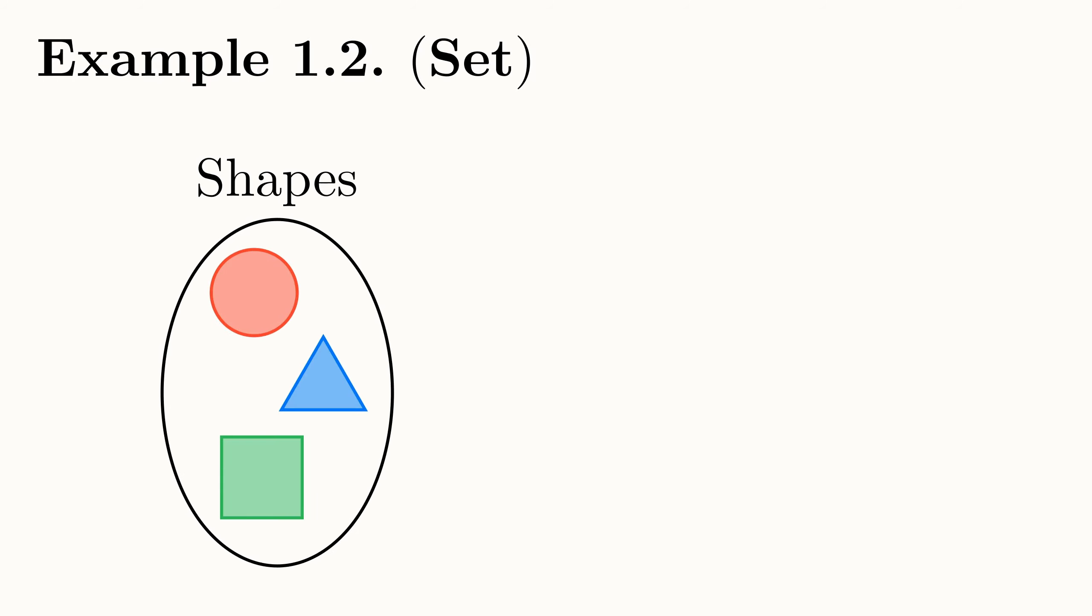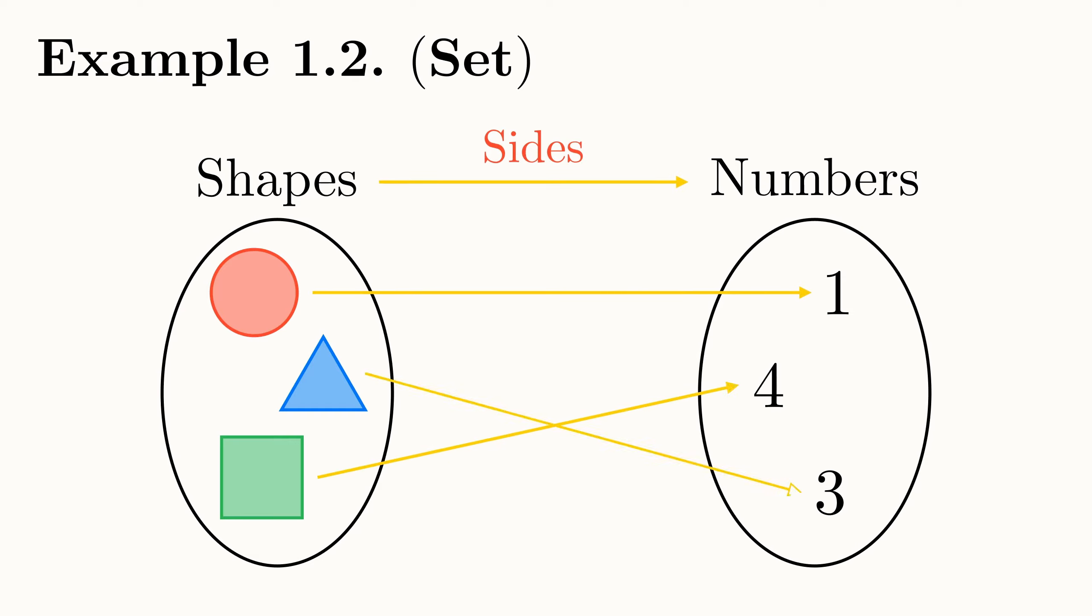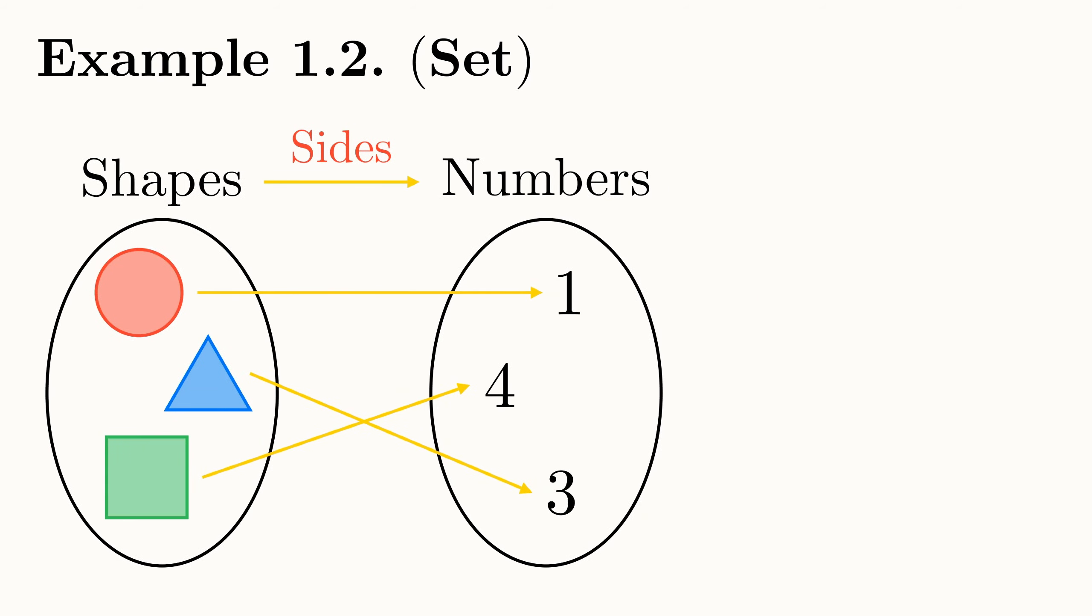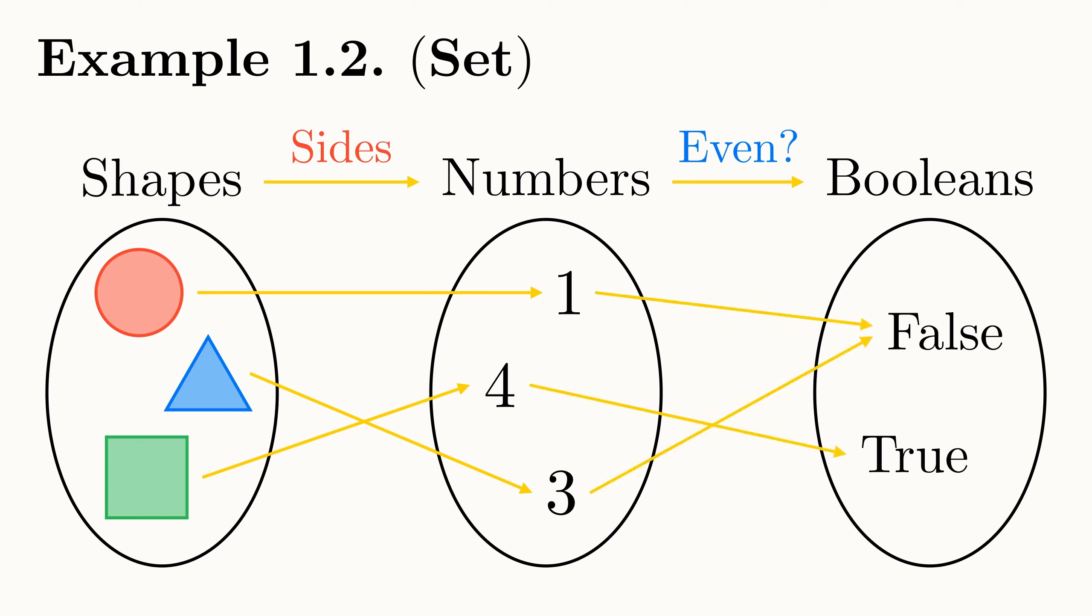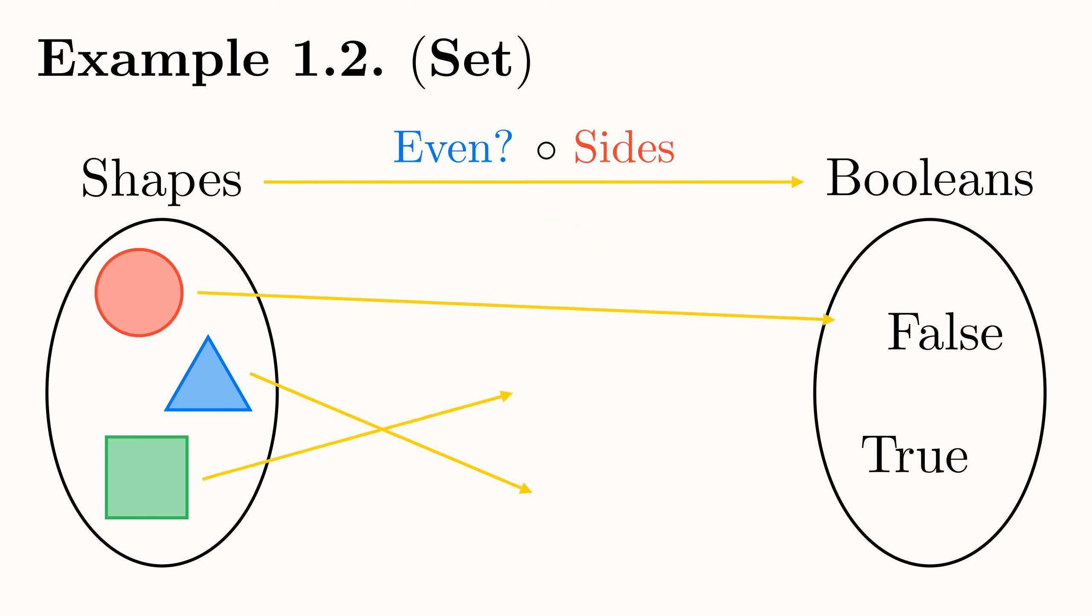Our objects are sets, such as the set of shapes or the set of natural numbers. And our arrows are functions, like the function that maps each shape to the number of sides it has. The composition in our category is functional composition, defined by, for any element in our first set, first mapping it to an element in the second set, then mapping that element to an element in the third set. In our example, the composite map even follows sides would map a shape onto true or false, depending on whether it has an even number of sides.